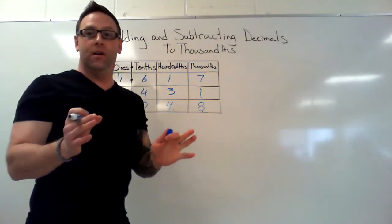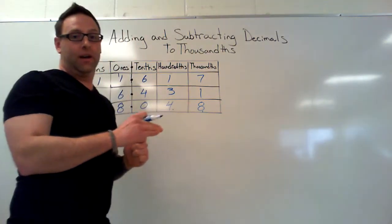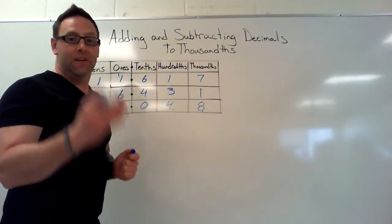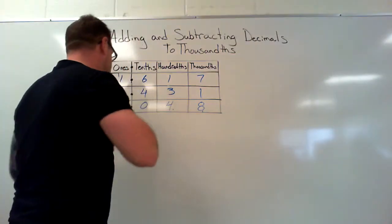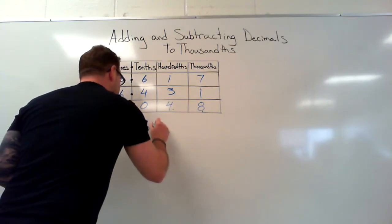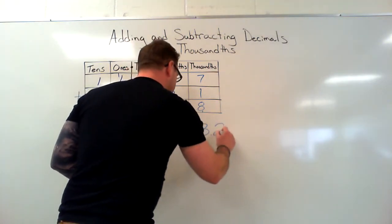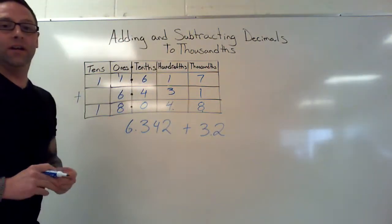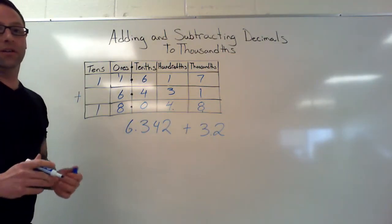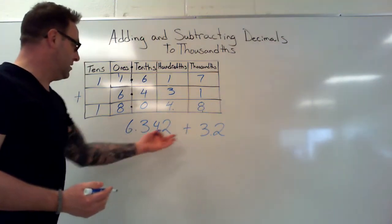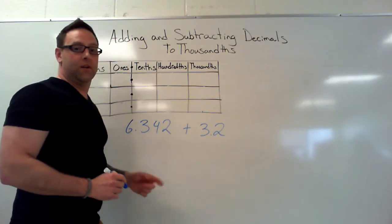Step one: line up the decimal points. Now here's a curveball — what happens if we have different numbers of place values? Let's take a look. Here I've got six point three four two plus three point two. You're thinking, if I just put these together the decimals aren't going to line up — and you'd be exactly right. So what we're going to do is line up the decimals in the place value chart.